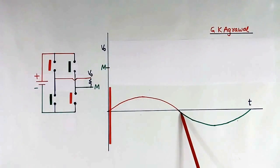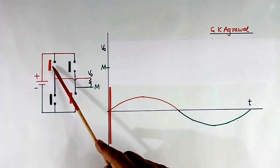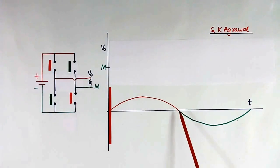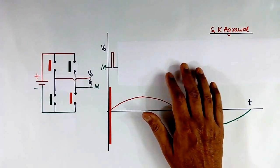This plus side voltage we will generate using this red color switch, these two. Negative side, green color, we will generate using these two green color switches or IGBT. Now here, both switches are open, so this is 0V.